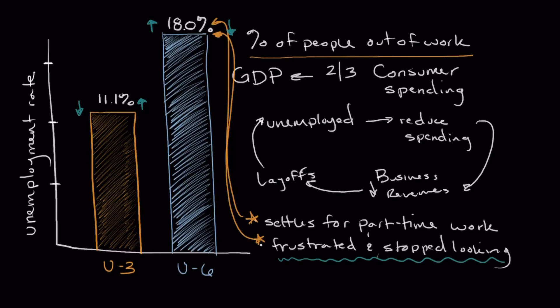Looking at both the unemployment and underemployment rate together helps us get a better sense of how the economy is really doing. Right now, people are very uncertain, and when people are uncertain there's not a great deal of spending — people play it safe and save more. Our savings rate is much higher than it's ever been, which is good for individuals but not great for the economy. Looking at the data helps us get to a position where we can make informed decisions for our households and our businesses.